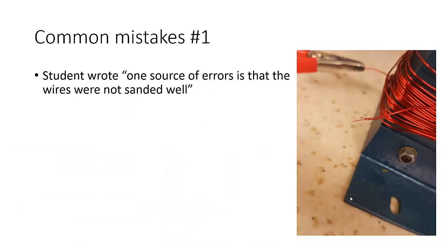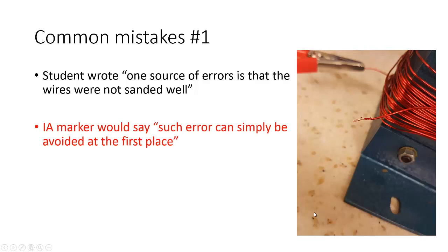Mistake number one: a student wrote that the source of error in his evaluation is that the wires were not standard. This is something very obviously simple, and also from the IB report, these kinds of evaluation sources of error will not be counted as an intellectual discussion or a valid point. You should always improve those things at the beginning before you do the experiment, and therefore I would rather you don't put this in your IA.